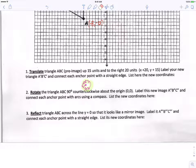And it says we're moving counter-clockwise about the origin 0,0. Label this new image A double prime, B double prime, C double prime. And connect each anchor point with arcs using a compass. I will not use a digital compass on this activity. When I am back on Wednesday, we will show you how to use a compass.